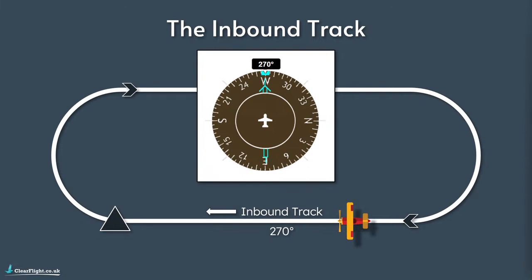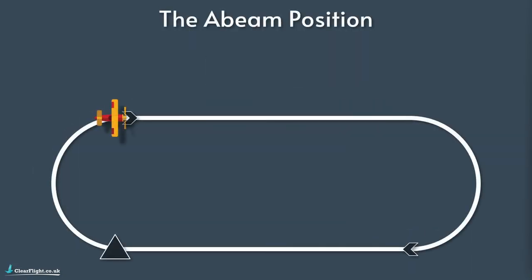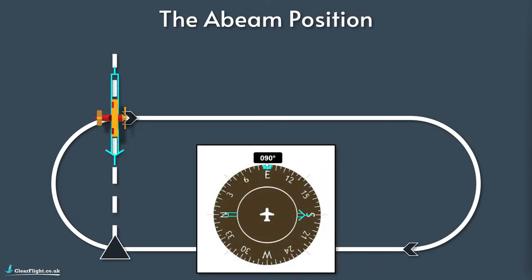You reach the holding fix and you're going to start a right-hand turn - that's what we call the outbound turn. You fly a rate-one level turn onto the outbound leg. At the end of this outbound turn you should be at what we call the abeam position, where you're 90 degrees across the hold. That's indicated by the bearing pointer showing 90 degrees to both the inbound and outbound tracks - in this case, the bearing pointer sitting on 180 degrees.